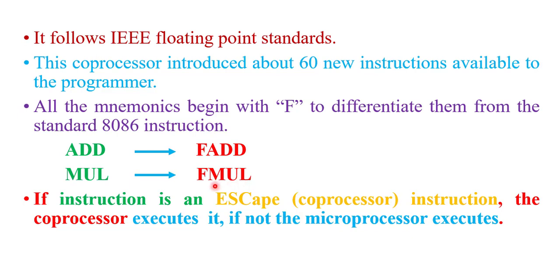8087 only executes these type of instructions having prefix F. If instruction is an ESCAPE instruction that instruction is executed by coprocessor, it means 8087. If not the microprocessor executes it, microprocessor means 8086.